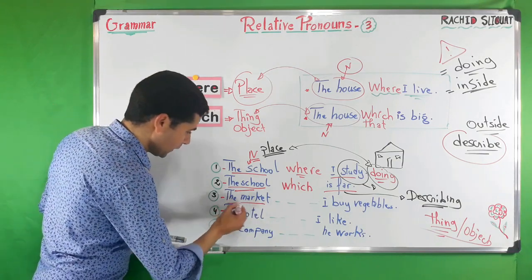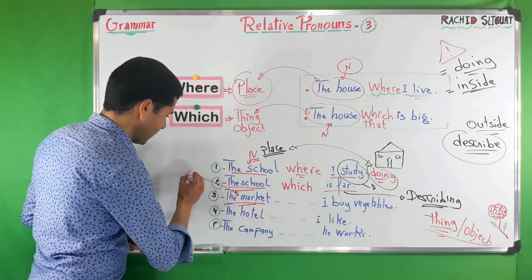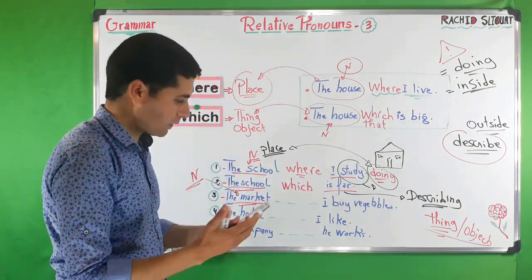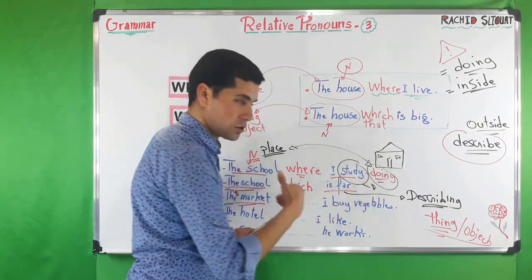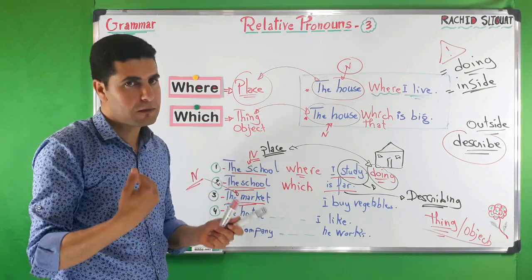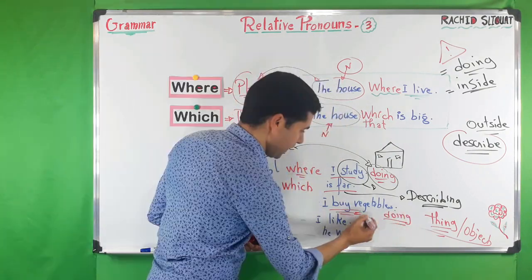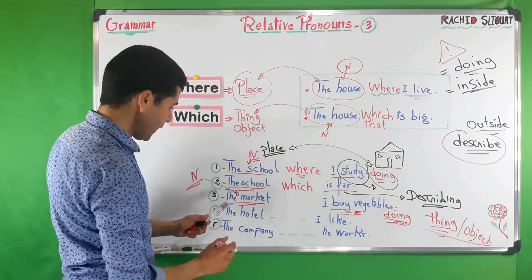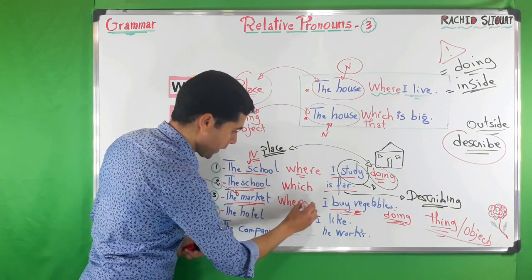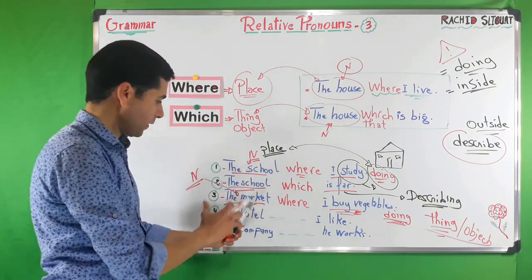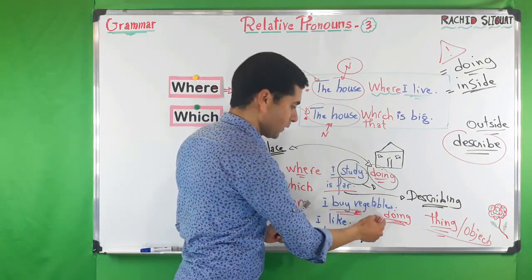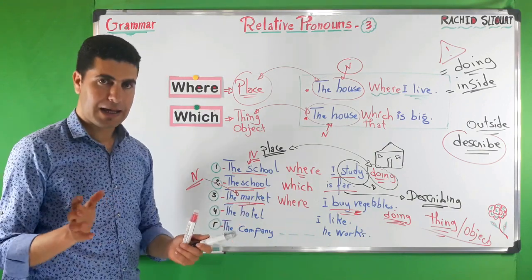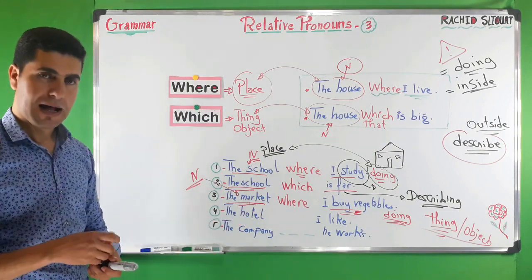Number three: 'The market I buy vegetables.' The noun is 'the market.' Buying vegetables is doing something inside the market. So we say: 'The market where I buy vegetables.' We use where because we are doing something in that place — buying vegetables.